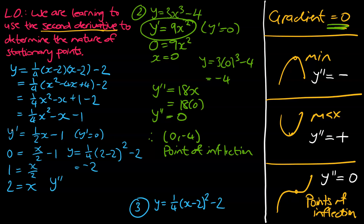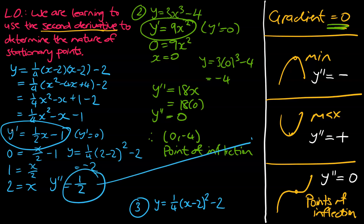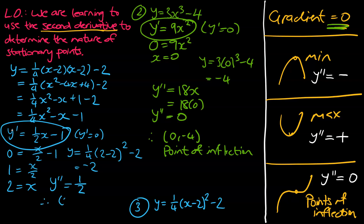Final step — let's find the second derivative. Differentiating y dash equals one half x minus 1 gives y double-dash equals one half. The x disappears, and the constant minus 1 disappears too. This is a positive number, and matching it with our table we know that a positive second derivative means a maximum. So that mathematically confirms the turning point of this equation is a maximum. Therefore (2, -2) is a maximum.